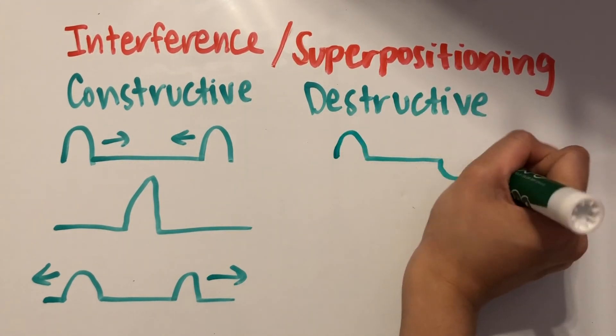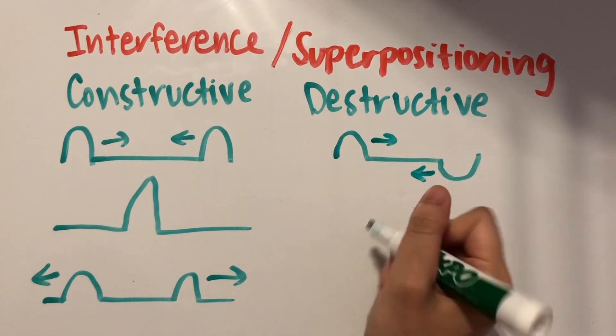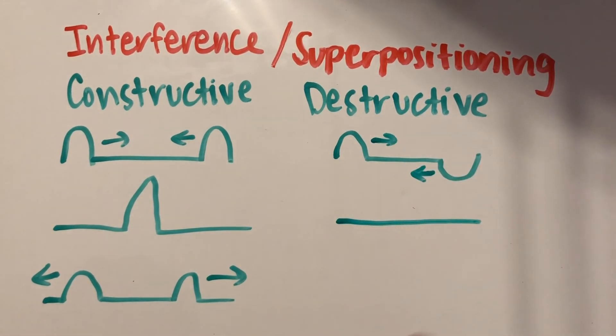In destructive interference, the waves can pretty much cancel each other out. When these two waves meet, it'll look like there's no wave there at all. But even though it looks like nothing is there, energy is still passing through the medium. So that means that when they come out of that interaction, they'll still be moving with the same energy in the same directions that they were moving in before.